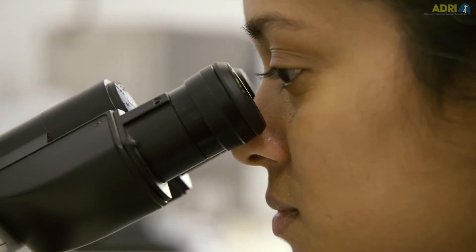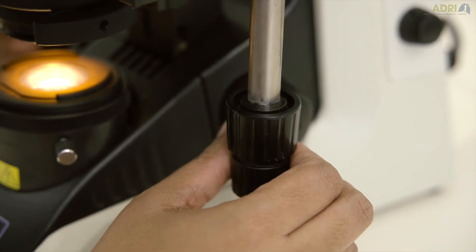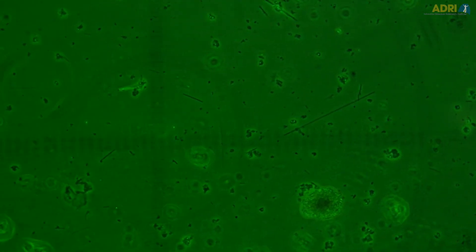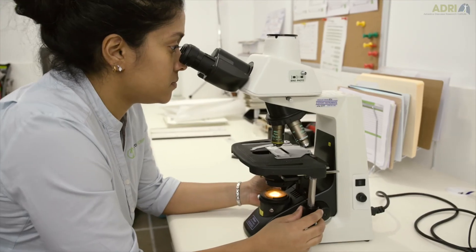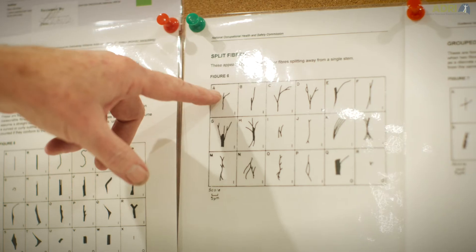We count 100 fields of view so we move the stage of the microscope across and we look at each field of view and count the number of respirable fibres in there and that will give us a concentration and then a number of fibres and we can work that out into a concentration of fibres per millilitre of air.